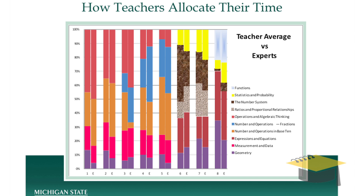Each of these columns — there are eight of them — represents a particular grade, one through eight. There are two bars within each column. The one to the left is a result of a study we did over hundreds of teachers, having them record on a daily basis what content they covered, and this shows how they allocated that time across the year in the ten big topics from the Common Core. The bar to the right within the column is what the experts say should be being done in order to adequately cover that topic.